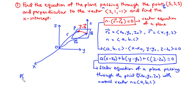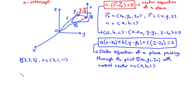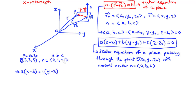So we have P0 = (5, 3, 5), and then we have the normal vector having components (2, 1, negative 1). Let's try to find the scalar equation of the plane. We have a = 2, b = 1, c = negative 1, and x0 = 5, y0 = 3, z0 = 5. So for a, we have 2 times (x minus 5), plus b which is 1 times (y minus 3), plus c which is negative 1 times (z minus 5), equals 0.